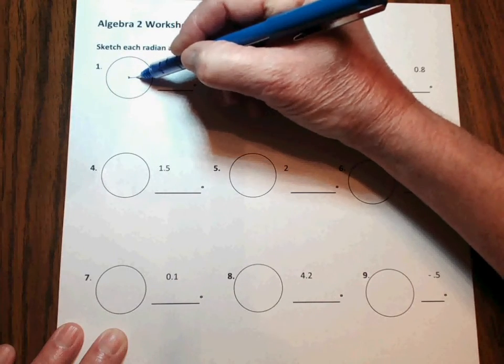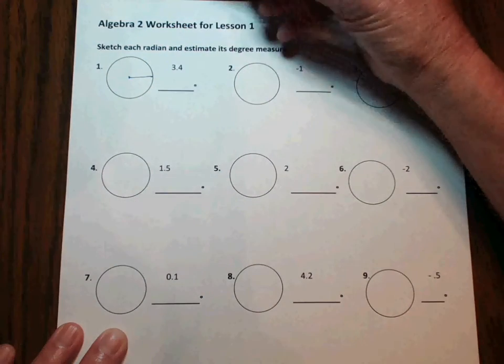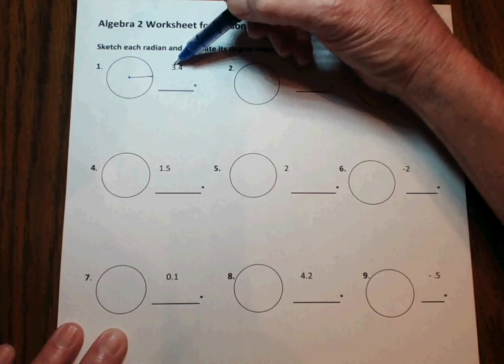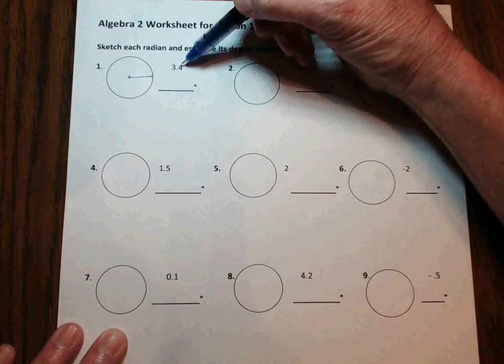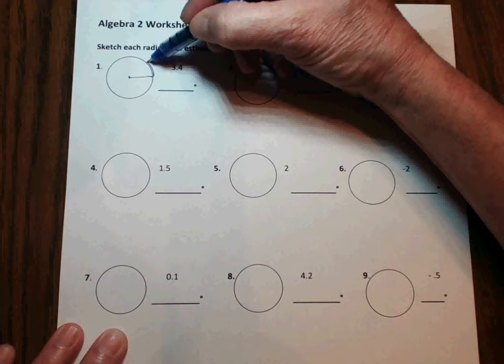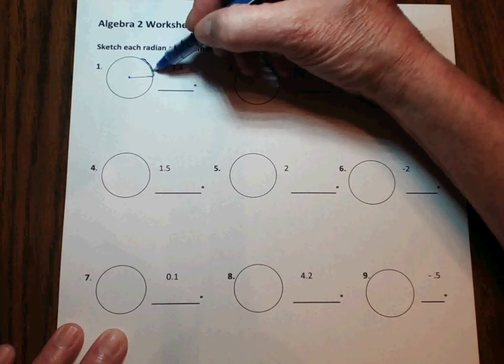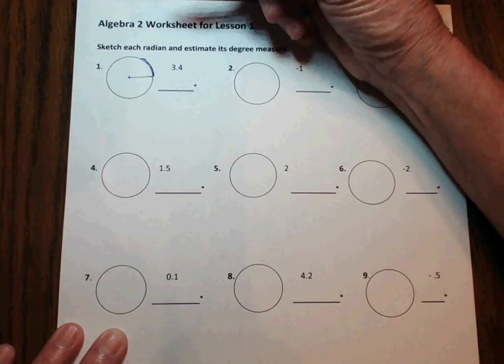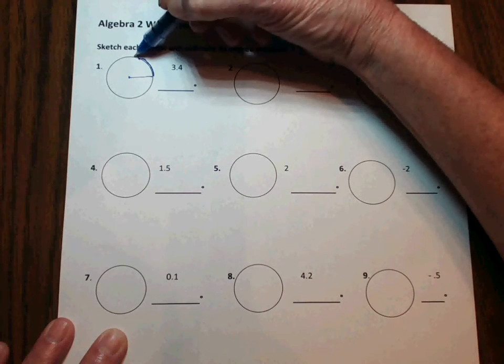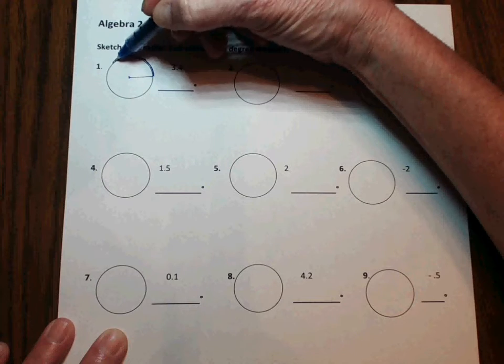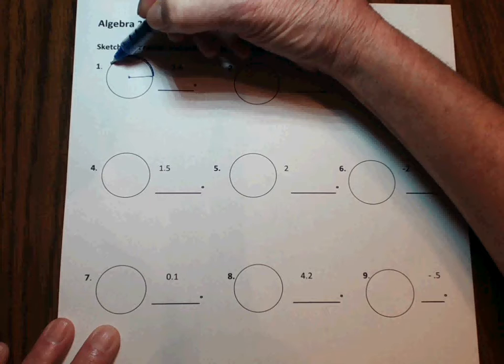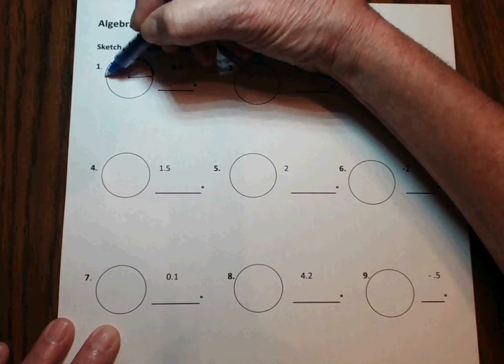We need to take this radius length and wrap it 3.4 times around the outside of the circle. That looks to be about one radius length. That looks to be about two. This is about three, point four.